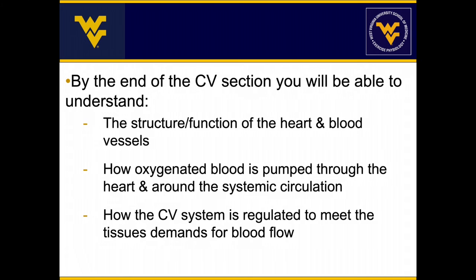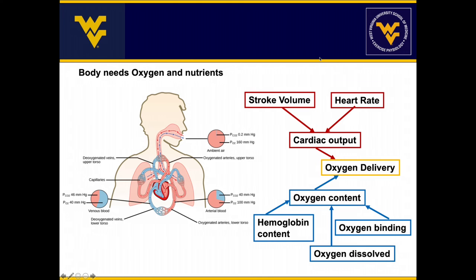We'll go over some of the structure and function of the heart from a very simplistic point of view — how oxygen is pumped through the heart and around the systemic circulation, and how the cardiovascular system is regulated to meet the tissue demands. The key function of the cardiovascular system is simply to supply the body with oxygen and nutrients. We breathe in oxygen from the atmosphere, it goes into the lungs and through the alveoli where oxygen is diffused into the bloodstream, taken to the heart, pumped out through many vessels throughout the systemic circulation, and then oxygen is diffused into the organs and tissues while carbon dioxide and waste products of cellular metabolism are picked up and breathed out.